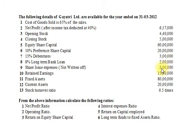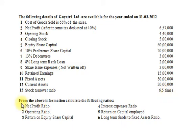Share issue expenses not written off Rs. 3,00,000. Retained earnings Rs. 15,00,000. Fixed assets Rs. 80,00,000. Current assets Rs. 20,00,000. And stock turnover ratio 6.5 times. From the above information we are to calculate the following ratios.